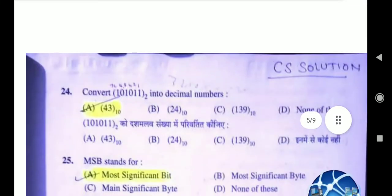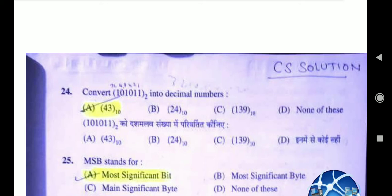Question 24: Convert 101011 into a decimal number. यह आपको binary number दिया गया है जिसको decimal में change करना है। इसको करने के दो tricks हैं, लेकिन एक short trick: सबसे left से दिया गया है 1, जो most significant bit है, और सबसे last में भी 1 है जो least significant bit है। हर एक bit का अपना weight होता है। Left से start करेंगे: 1, 2, 4, 8, 16, 32 — जितनी भी bits दी गई हों, इन सबको add करना है। जो result आएगा वही decimal number होगा — that is 43. Option A.